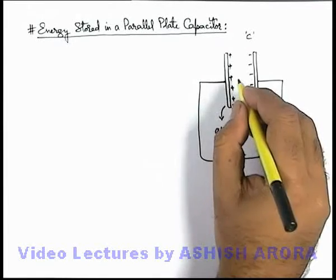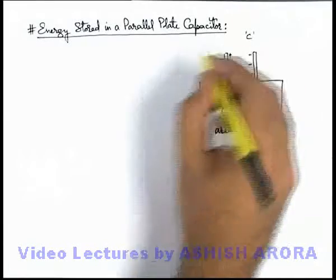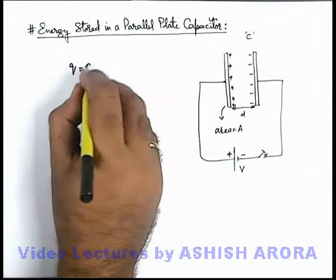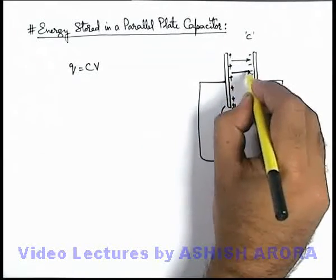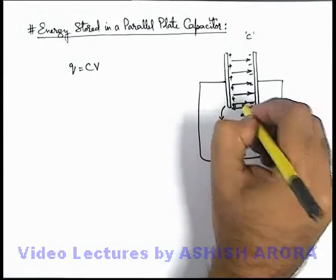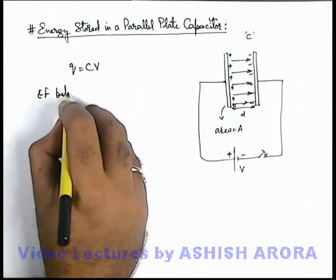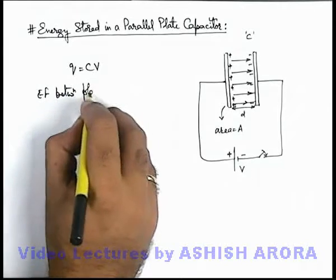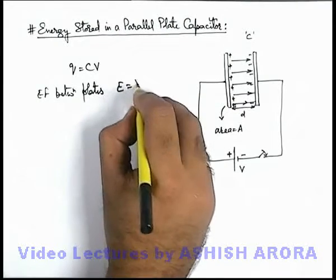After complete charging of the capacitor, which we term as steady state, the final charge on the capacitor is equal to CV. In this situation we can state that there exists an electric field, a uniform electric field from one plate to another. We can write electric field between plates which is established due to charging is equal to V by d.